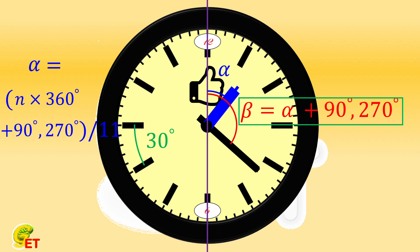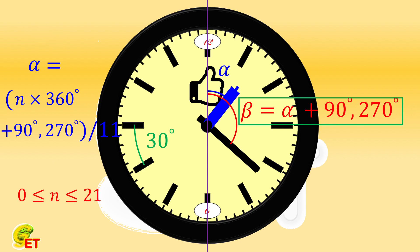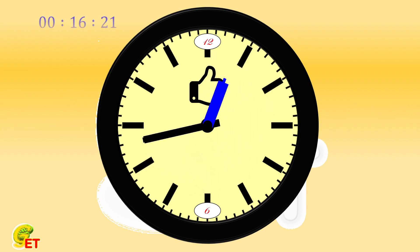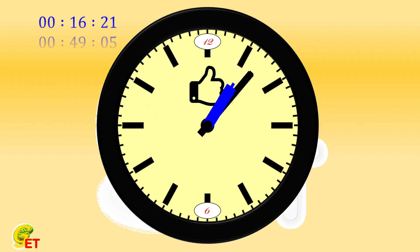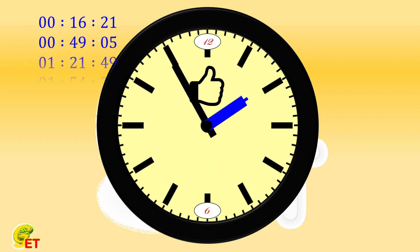Within 24 hours, alpha is between 0 and 720 degrees. So n can be any integer between 0 and 21, a total of 22 values of n, giving 44 values of alpha. Finally, let's take a look at the approximated positions where the hour hand and minute hand are perpendicular to each other for the 22 times between 0 and 12 o'clock.